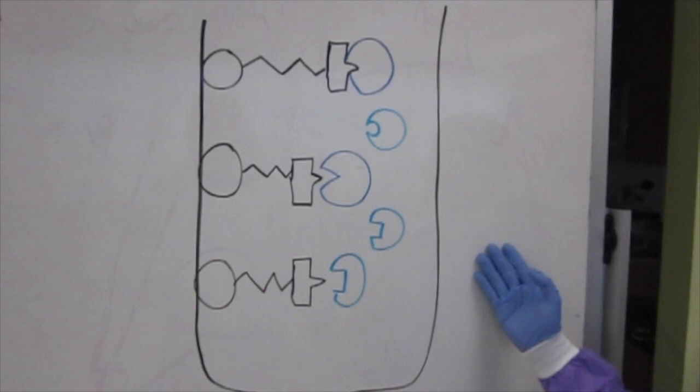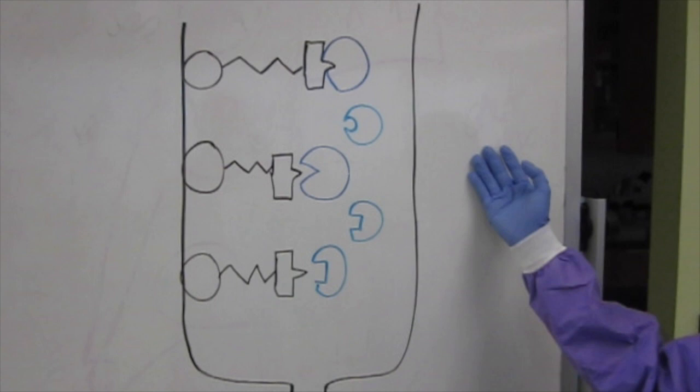Once you've prepped your affinity chromatography column, you're going to have your resin on the sides capturing GST Campari because of the glutathione that we have.